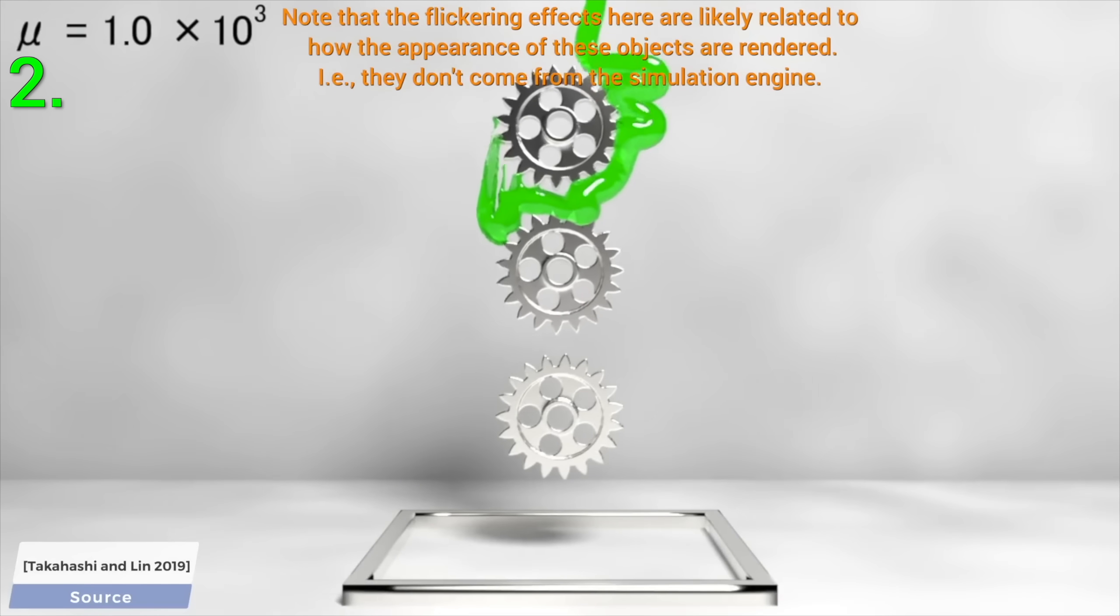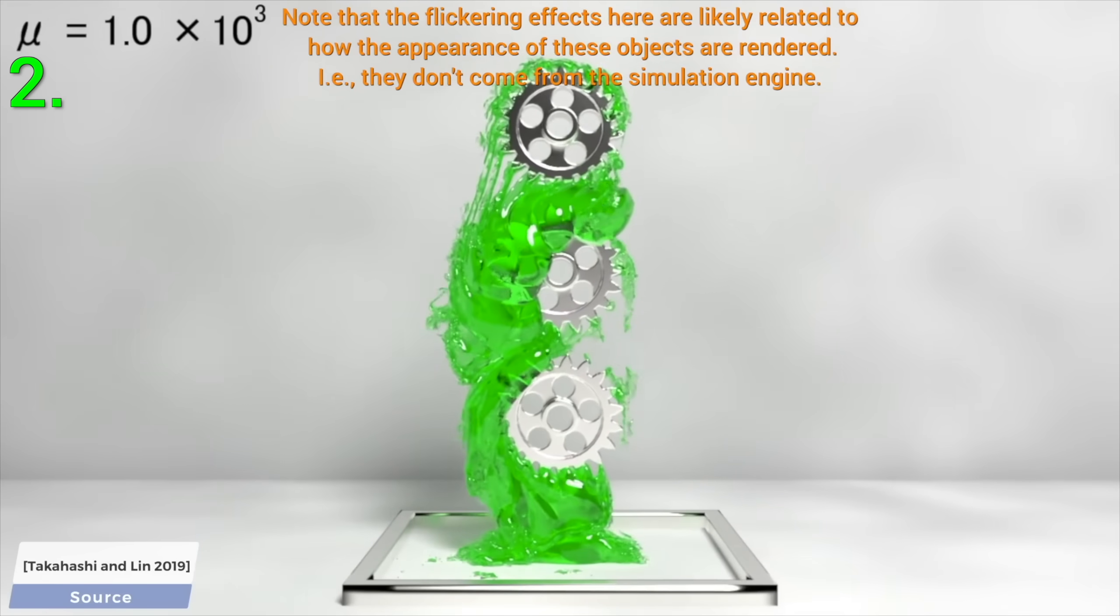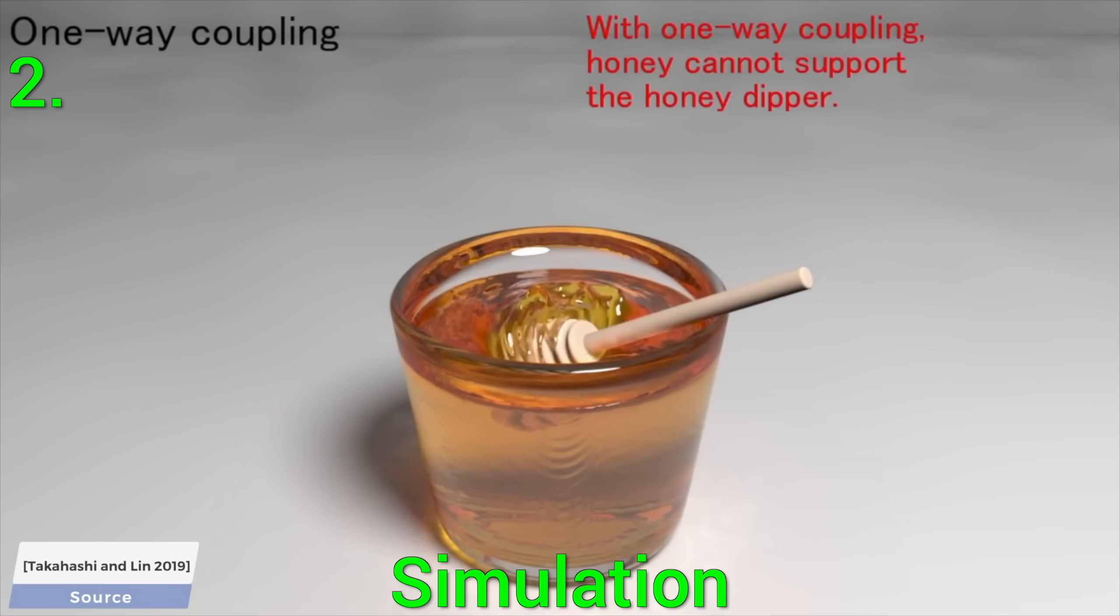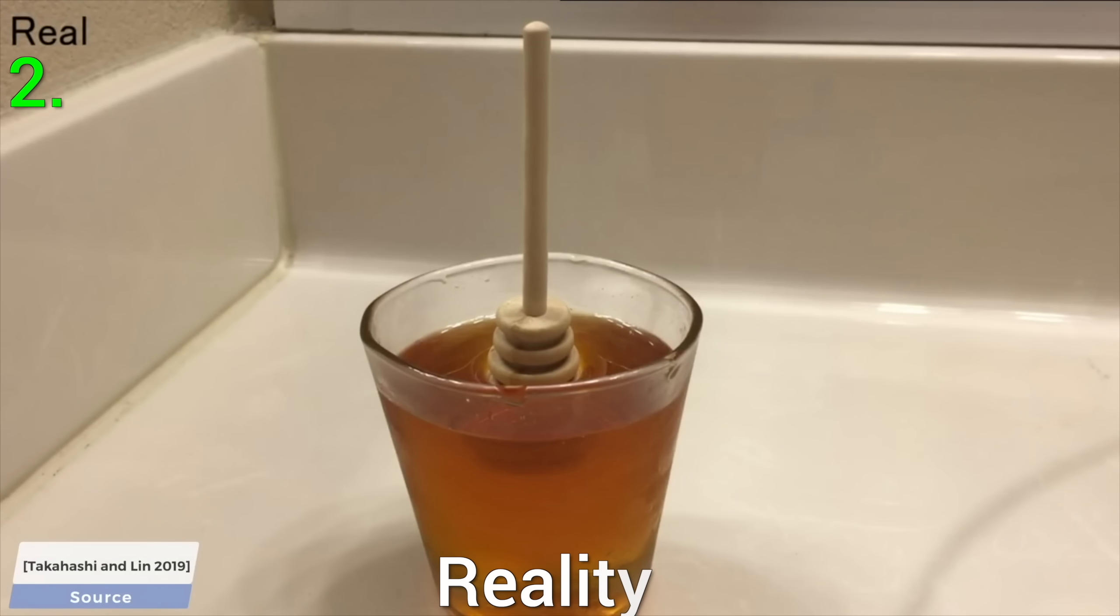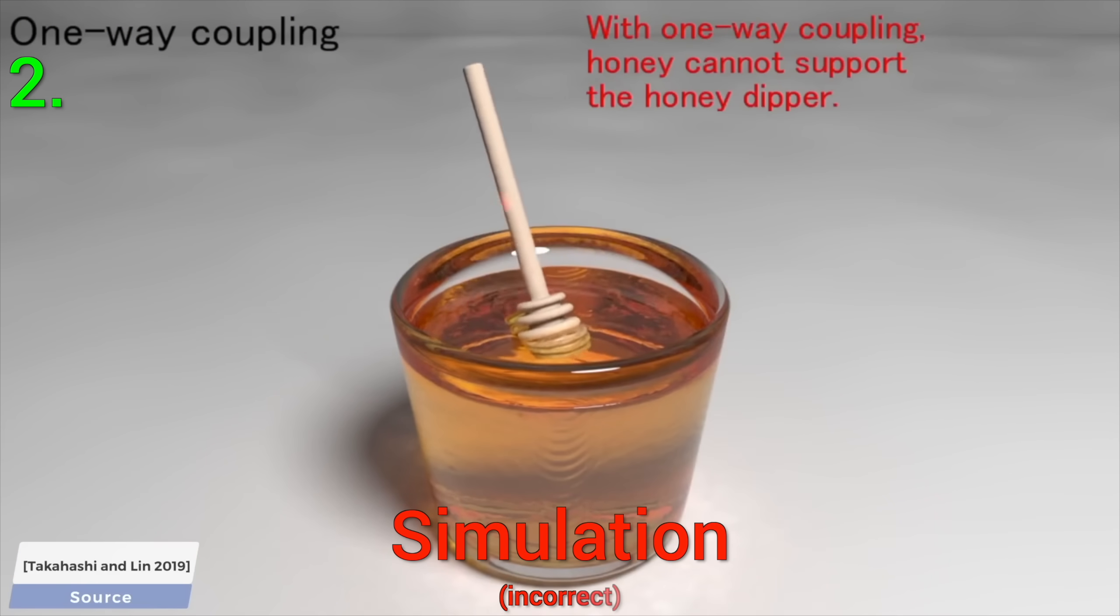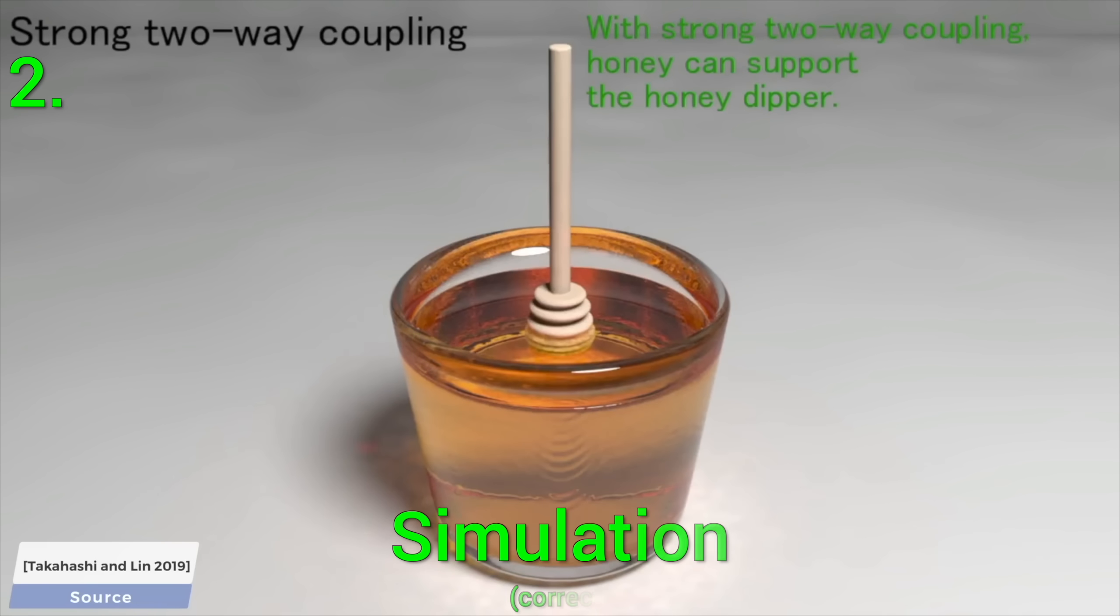Two, this technique simulates strong two-way coupling. What does that mean? Well, you see a simulation here that doesn't have it. So, is this correct? Well, not quite. The honey should be supporting the dipper, and it not only falls, but it falls in a very unnatural way. Instead, this technique can simulate strong two-way coupling, and finally, it gets it right.